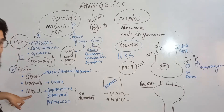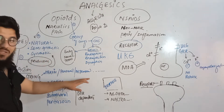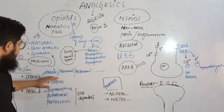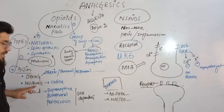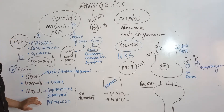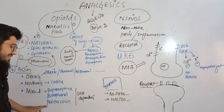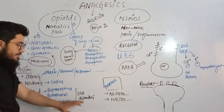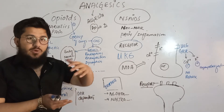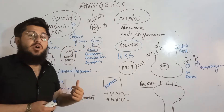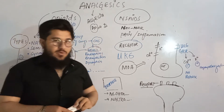On the basis of action, opioids are classified as strongly acting, moderately acting, and mixed acting. Strongly acting examples include heroin, morphine, fentanyl, and alfentanil. Moderately acting examples include codeine. Mixed acting drugs include buprenorphine, butorphanol, and pentazocine — these are dose-dependent, and overdosing them can cause toxic effects.